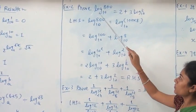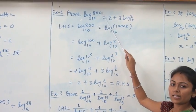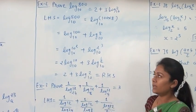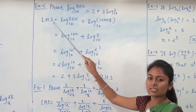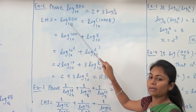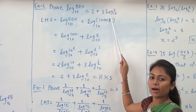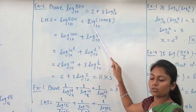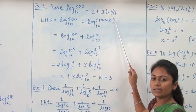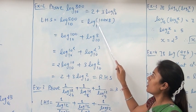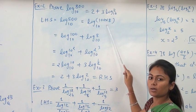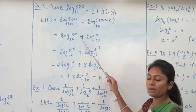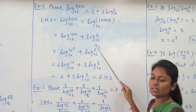Example 2: Prove that log 800 base 10 equals 2 plus 3 log 2 base 10. Taking LHS equal to log 800 base 10, we write log 100 into 8 base 10. By using the rule of logarithm of multiplication, this equals log 100 base 10 plus log 8 base 10.